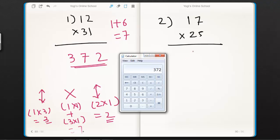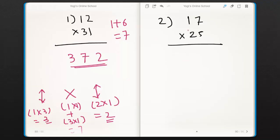Let's look at example number 2. 17×25. First multiply last digits. 7×5 is 35. So write 5 and take 3 as carry.